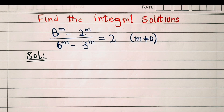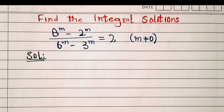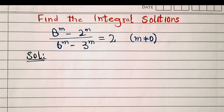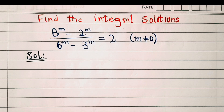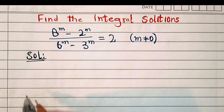Hello and welcome to Think and Derive. In this video we will find the integral solutions of (8^m - 2^m) / (6^m - 3^m) = 2, where m is not equal to 0, because in case m is equal to 0 that will not satisfy the given problem. So let's start.